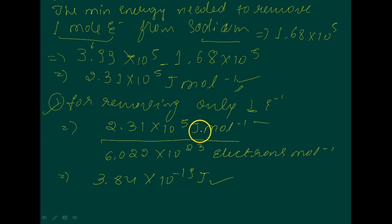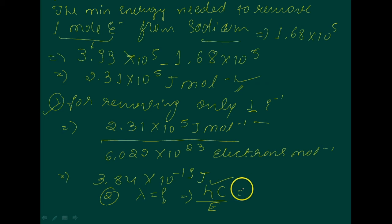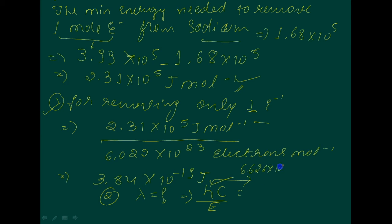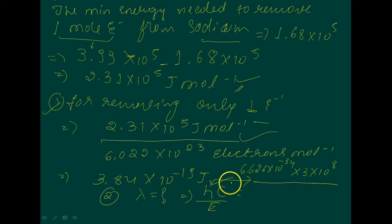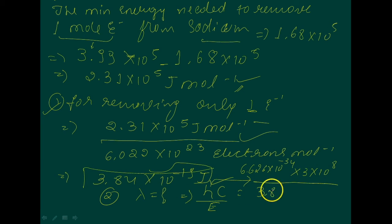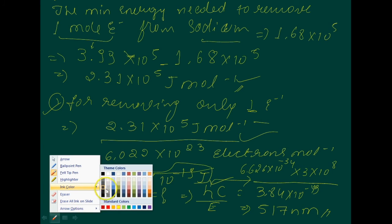This energy corresponds to the maximum wavelength, which is the second question. Using λ = hc/E: H is Planck's constant 6.626×10⁻³⁴ joule·second, c is 3×10⁸ meter per second, and the energy obtained is 3.84×10⁻¹⁹ joule. Calculating this gives 517 nanometers as the answer.